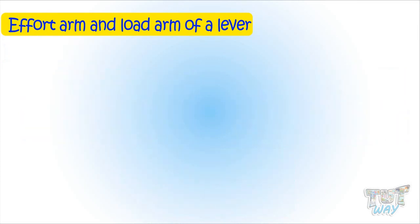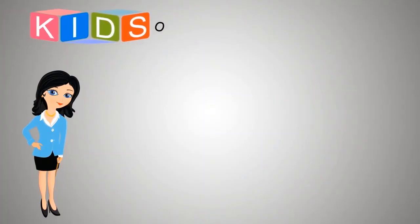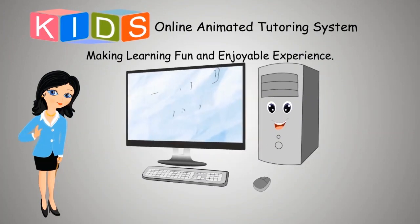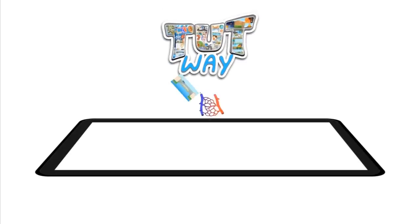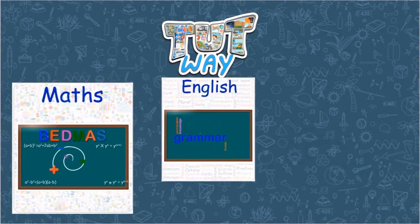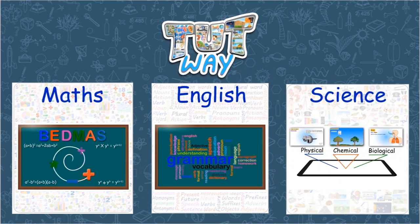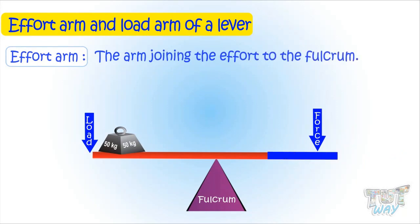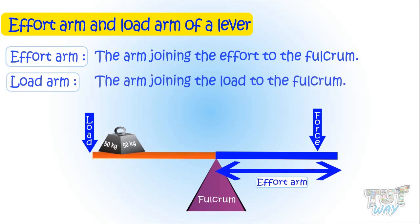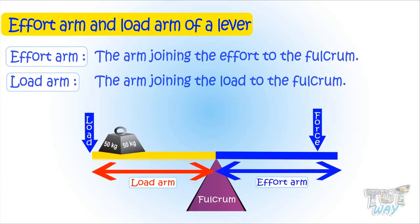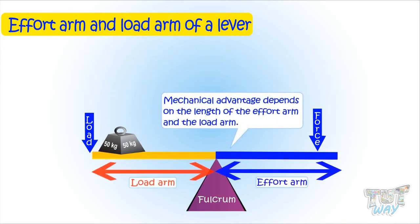Now let's learn about the effort arm and load arm of the lever. The arm joining the effort to the fulcrum is the effort arm, or the distance between the effort and the fulcrum. The load arm is the arm joining the load and the fulcrum, or the distance between the load and the fulcrum. And it's the length of the load arm and effort arm that decides the mechanical advantage of that type of lever.